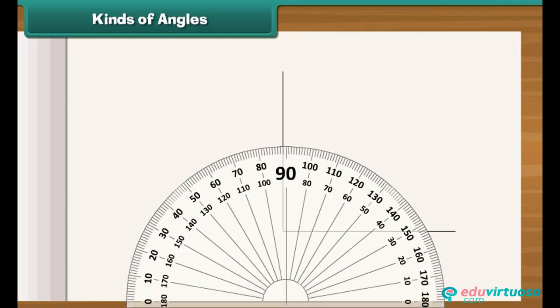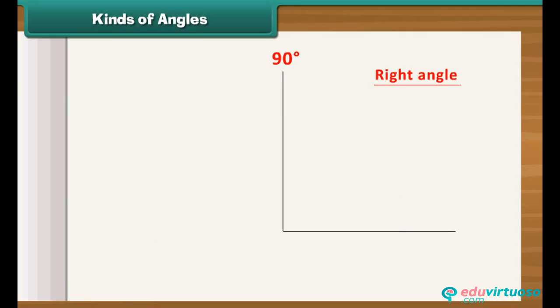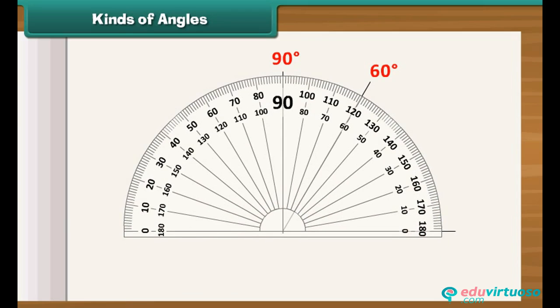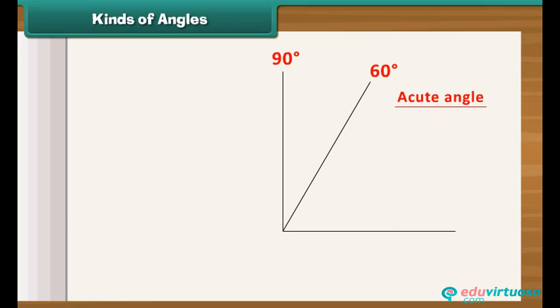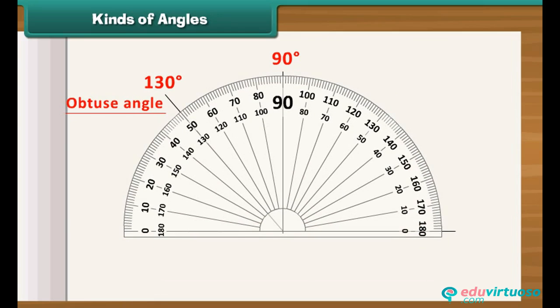An angle whose measure is 90 degrees is called a right angle. An angle whose measure is less than 90 degrees is called an acute angle. While an angle whose measure is more than 90 degrees is called an obtuse angle.